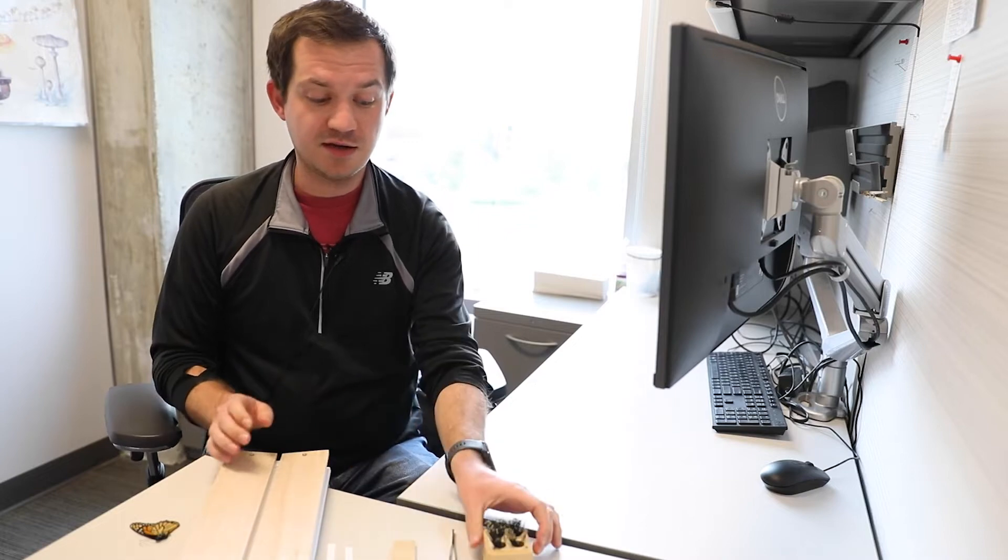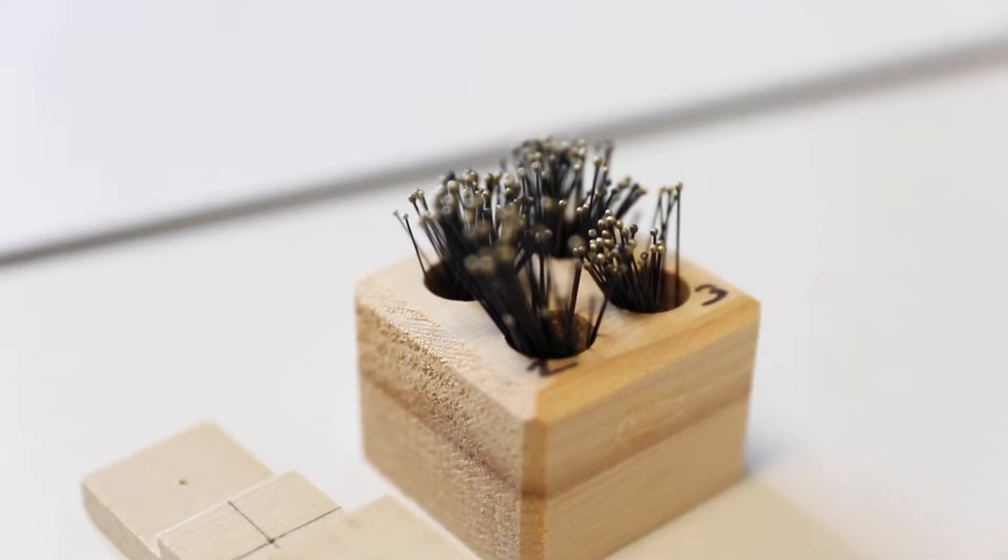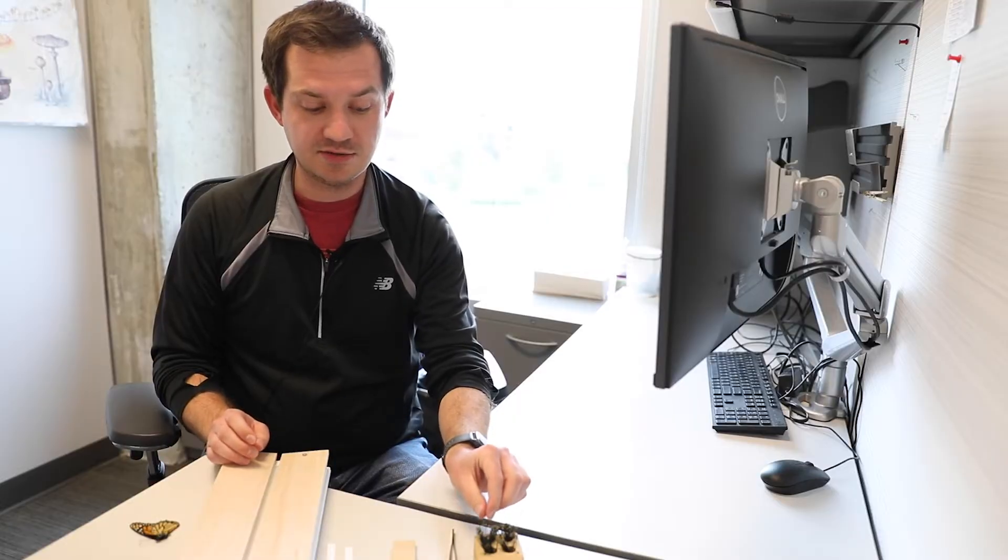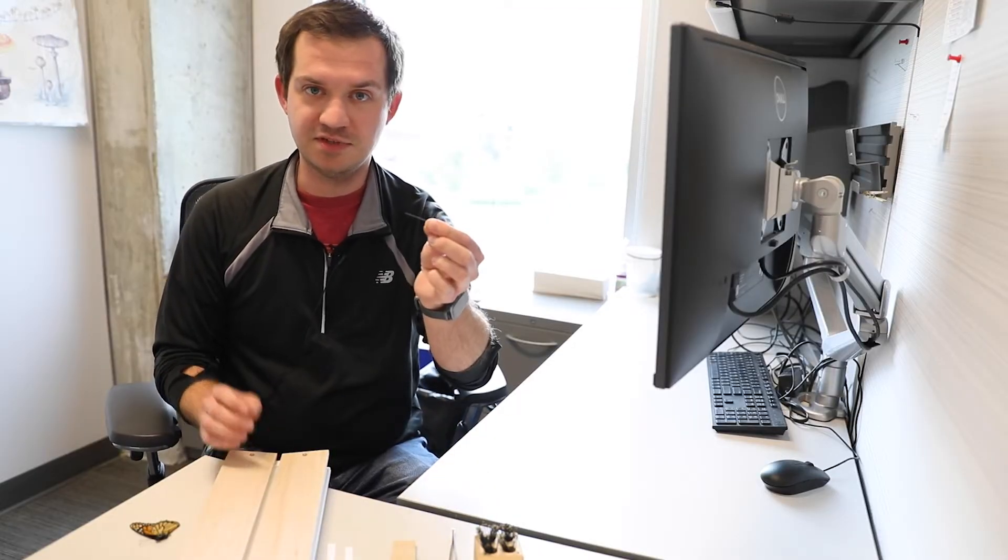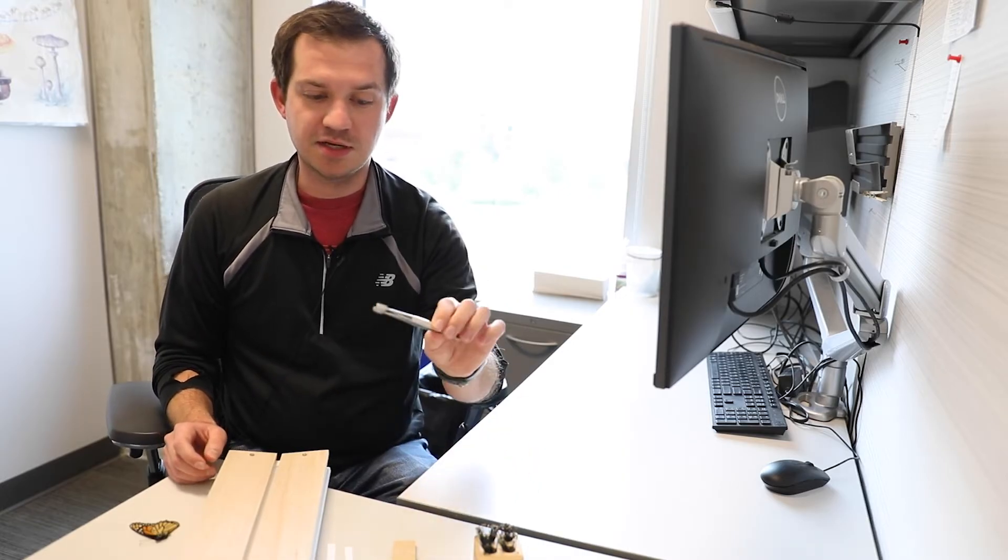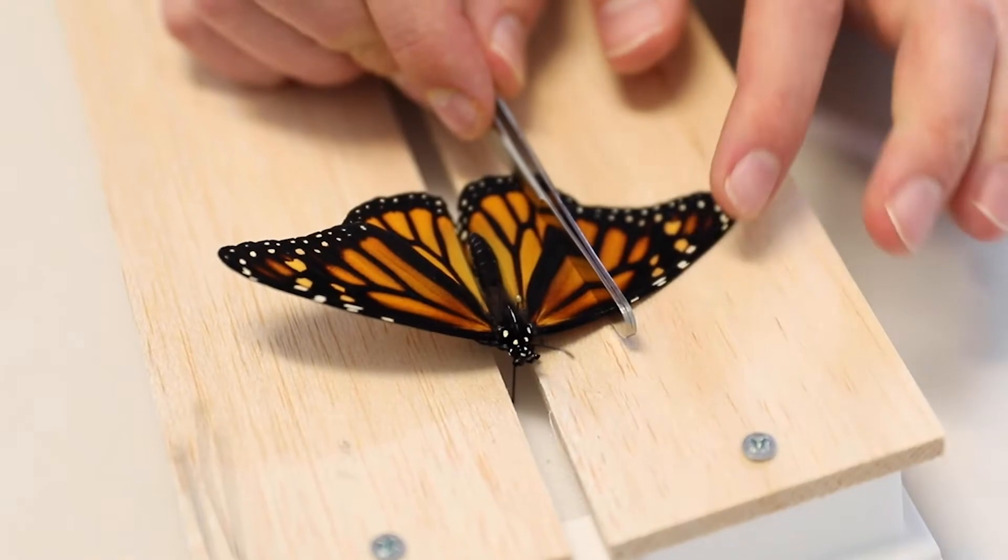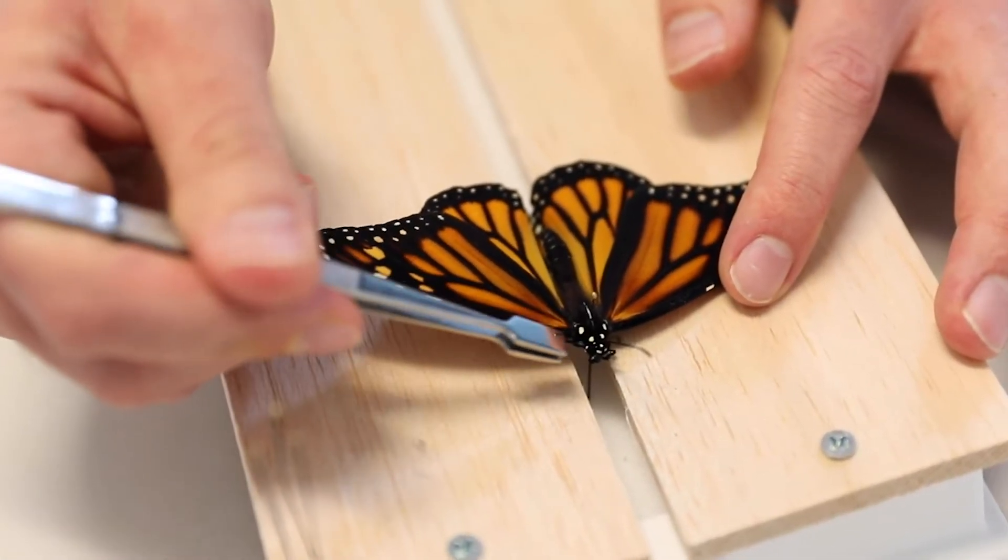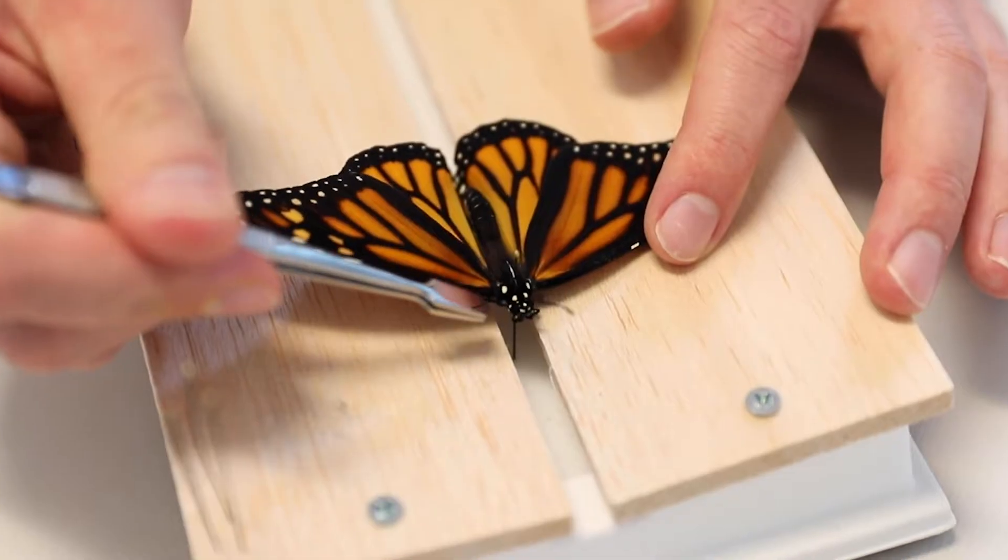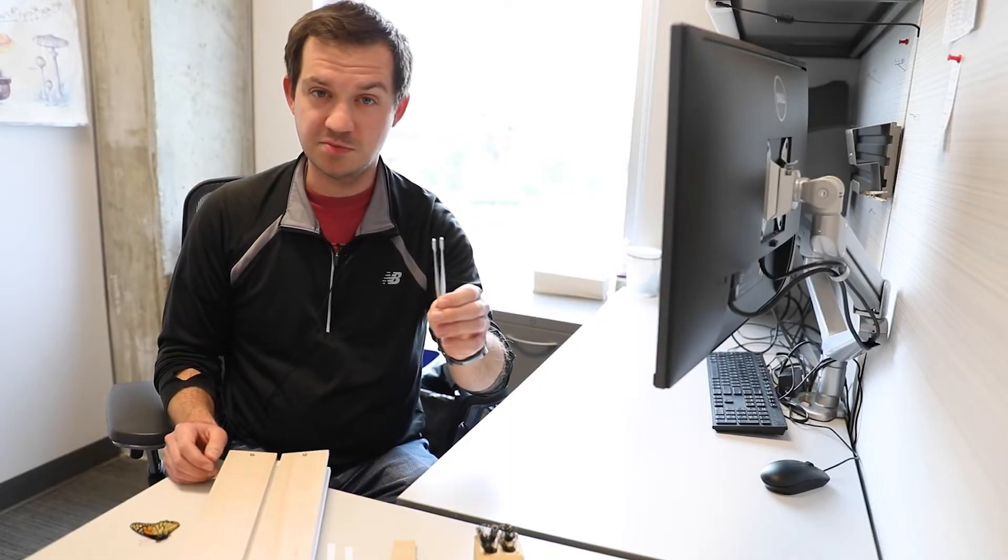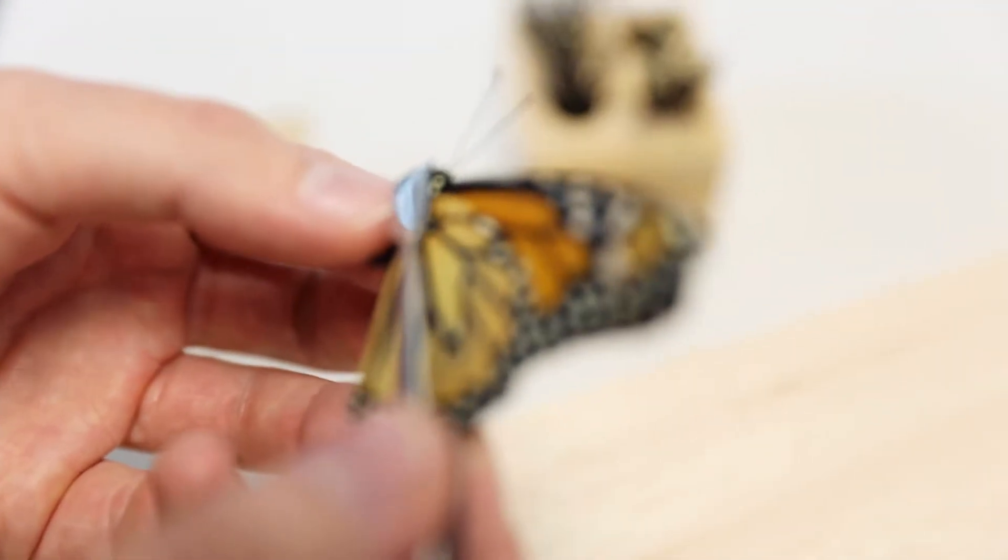Some other things that you're going to need: obviously some pins, standard size insect pins, usually the thickness of a thin sewing needle. We are going to use forceps - I really like to use these little spade forceps that have a shovel-like end on them. Other forceps can work decently well, but the more you get to that spatulate end, the better it helps to manipulate butterflies and moths when you're spreading them.